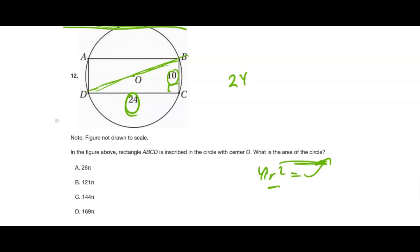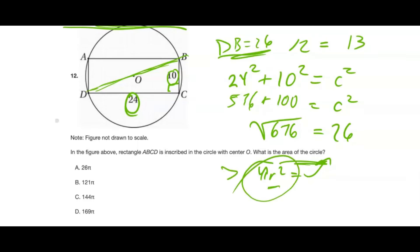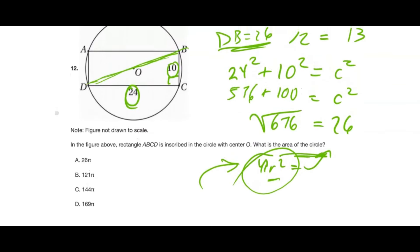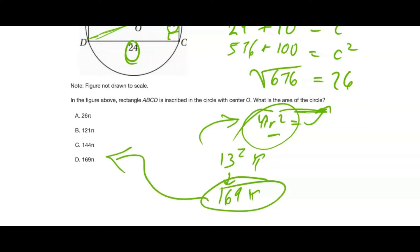Using the Pythagorean theorem: 24² + 10² = C². That gives 576 + 100 = C², so C = √676 = 26. DB is 26, which is the diameter, not the radius. Taking half gives a radius of 13. The area of the circle is π r² = 13² × π = 169π. That simplified answer corresponds to choice D, which is our final answer.